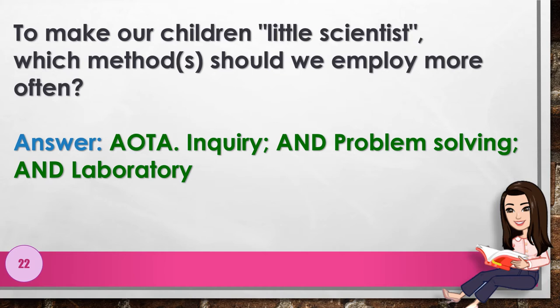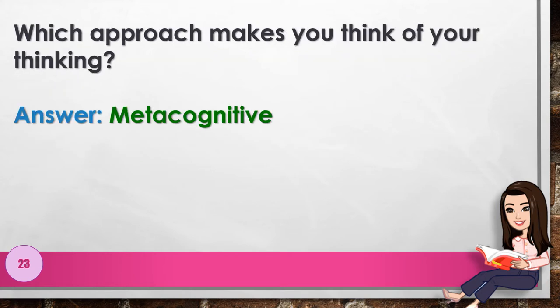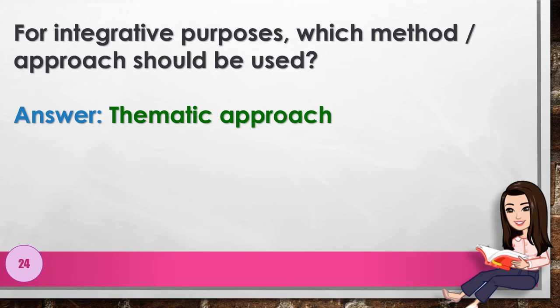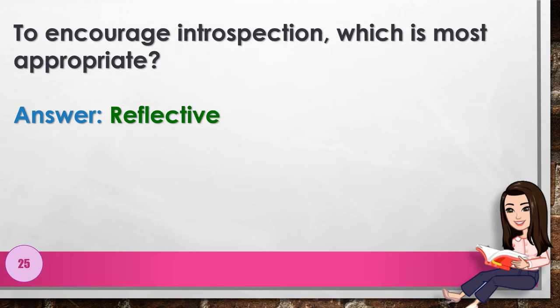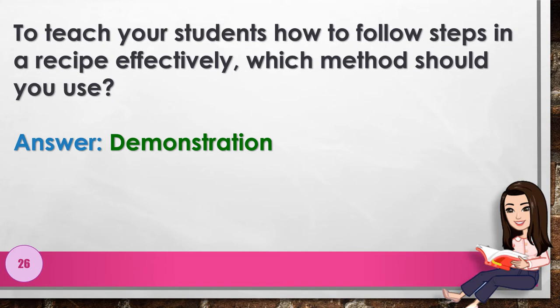Number 21: For direct instruction, which does not belong? Answer: inductive method. Number 22: To make our children little scientists, which method or methods should we employ more often? Answer: all of the above — inquiry, problem solving, and laboratory. Number 23: Which approach makes you think of your thinking? Answer: metacognitive.